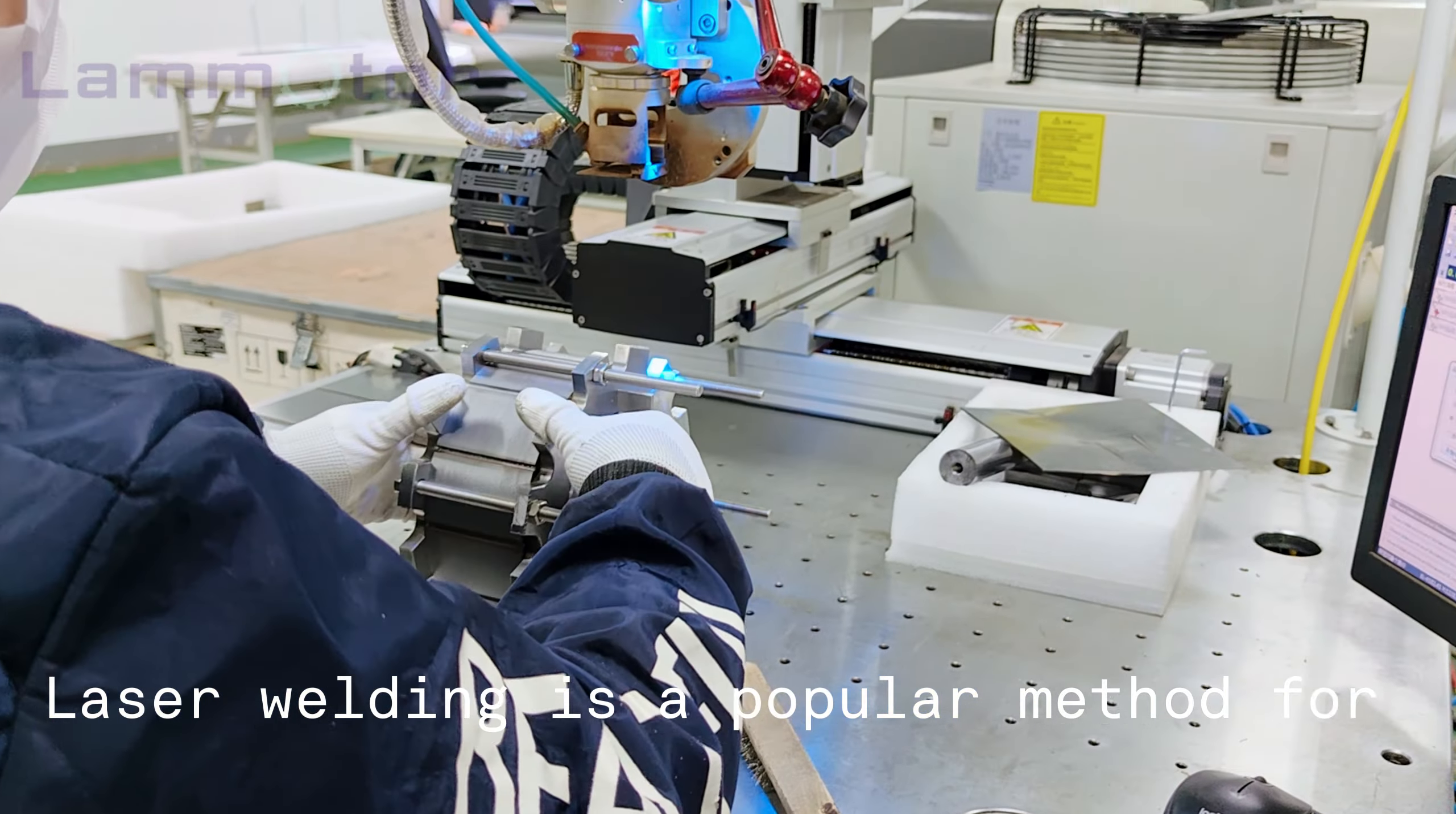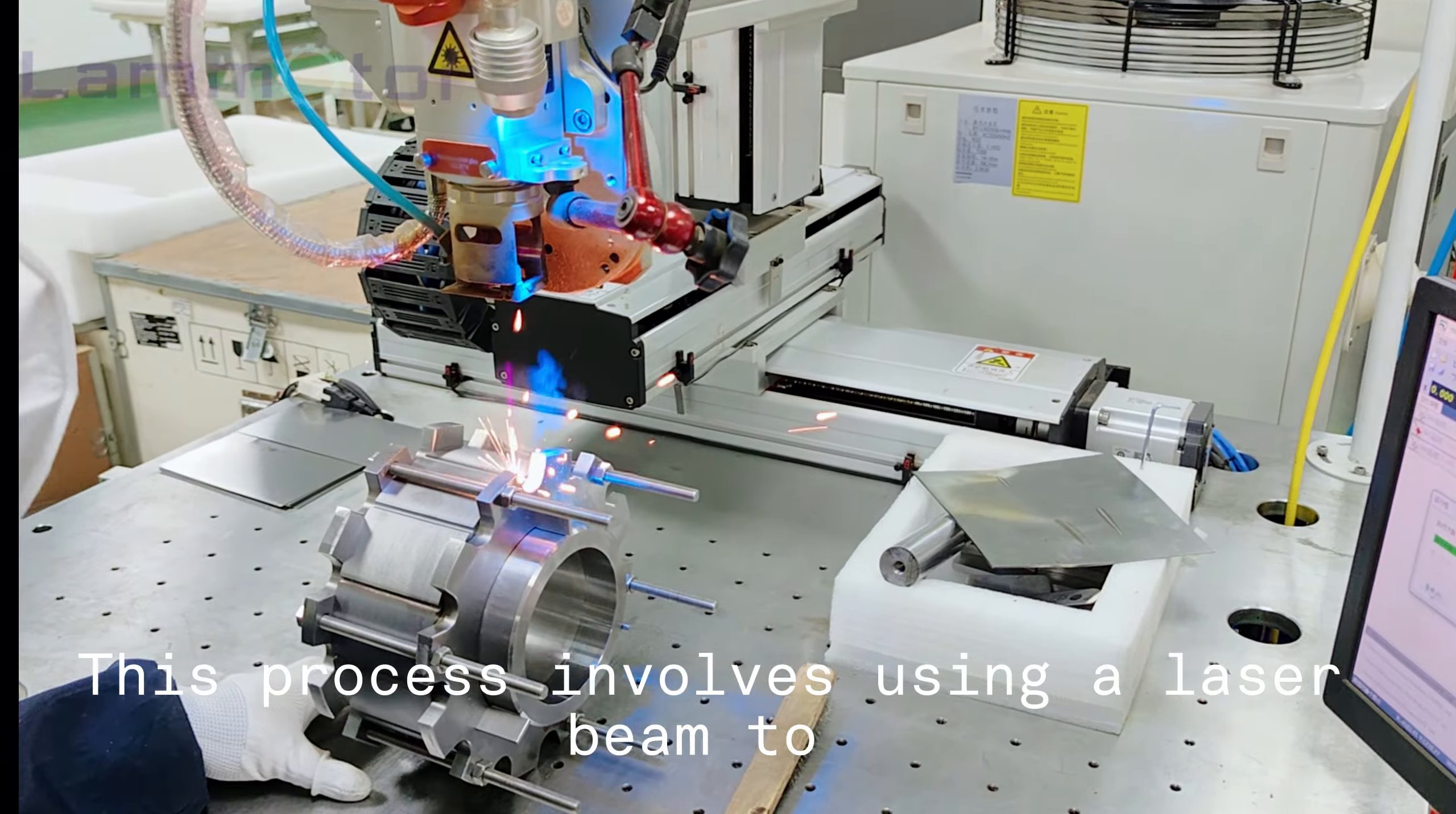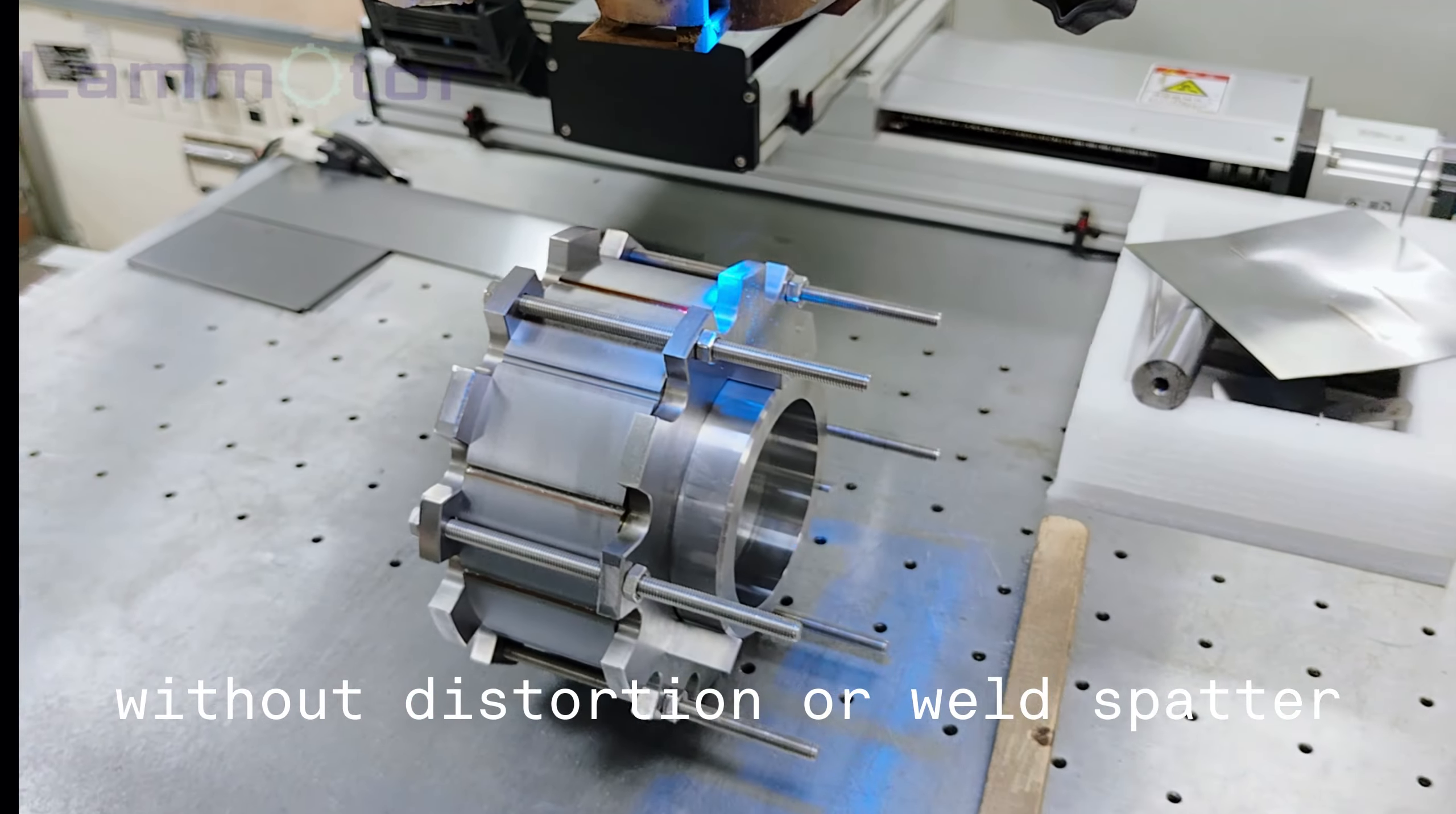Laser welding is a popular method for joining lamination stacks from motor cores. This process involves using a laser beam to create a strong and precise bond between the laminations. It can weld thin silicon steel sheets without distortion or weld spatter.